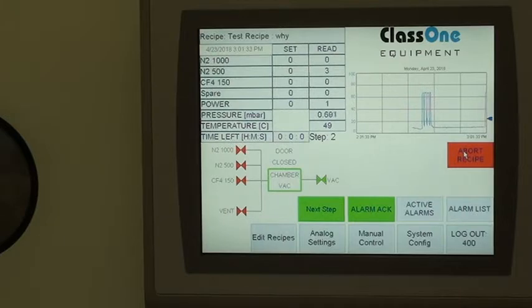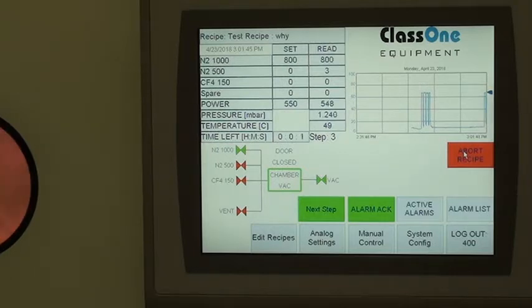Now we're going into step three after the pump down. Now 800, skins the flow. Stabilization. Power set at 550. 20 second RF step.